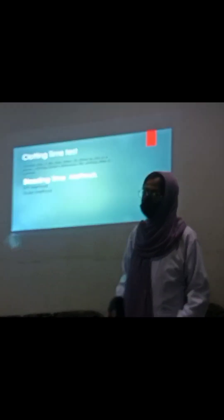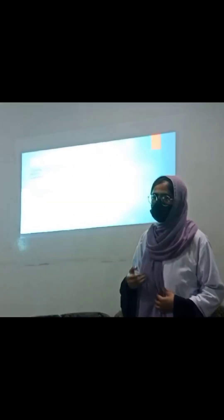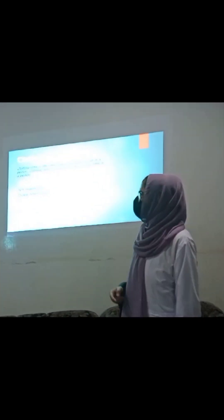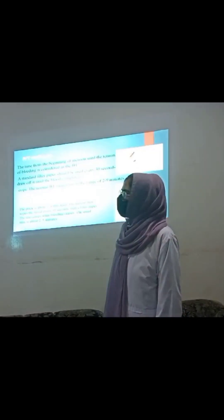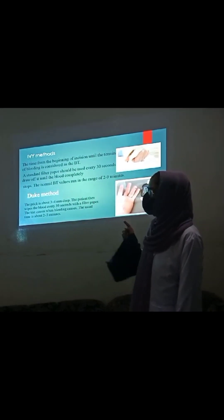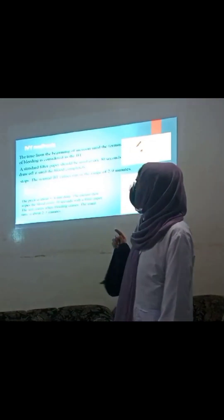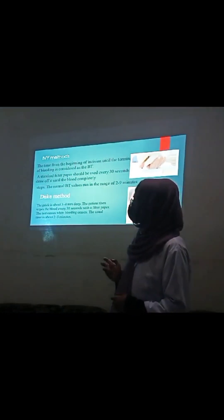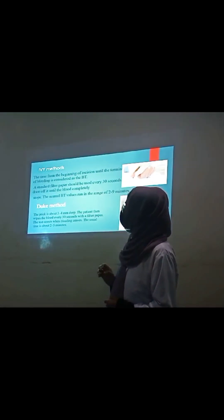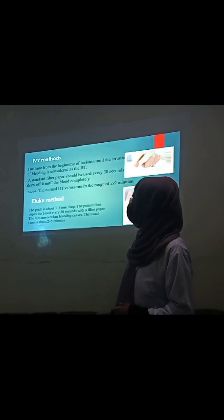Now I will discuss the methods by which we can determine Bleeding Time. There are two methods. First is the Ivy method and second is the Duke method. The Ivy method is measured from the beginning of an incision until the termination of bleeding. In this method, a standard filter paper is used, and blotting is done every 30 seconds until bleeding completely stops.